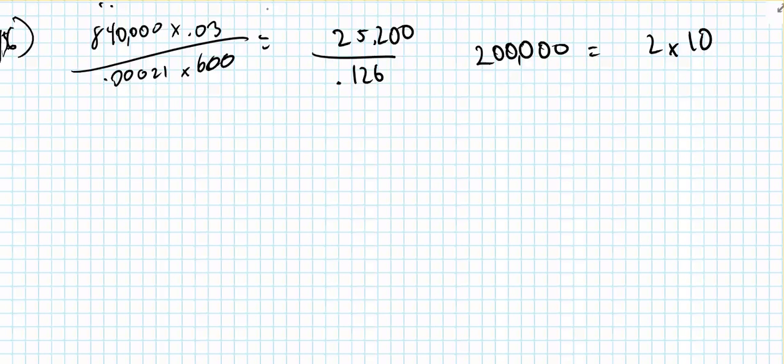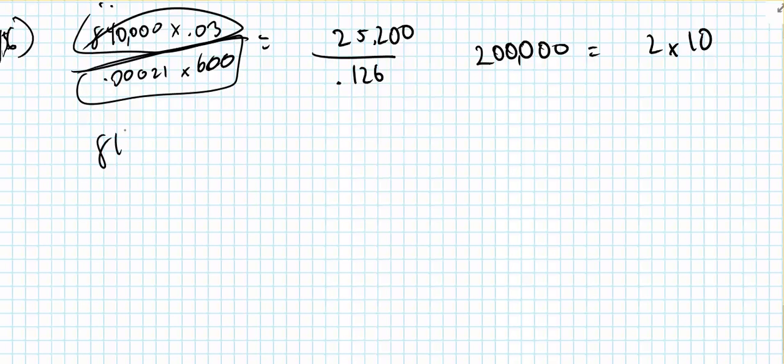So on 5.1, now we're working on 156. Problem 156 says 840,000 times 0.03 over 0.00021 times 600. We just multiply these two here. 840,000 times 0.03 gives us 25,200.